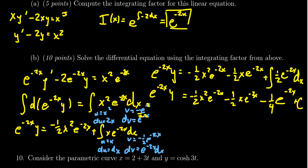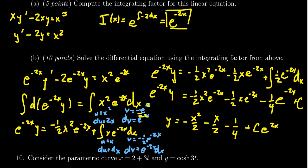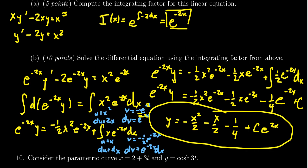To solve for y, we divide both sides by e to the negative 2x, which cancels the exponential factors on the right-hand side. We end up with y equals negative x squared over 2, minus x over 2, minus one-fourth, plus C times e to the positive 2x. This is the solution to the linear differential equation.